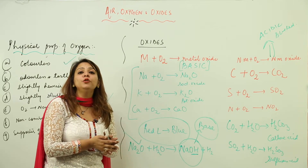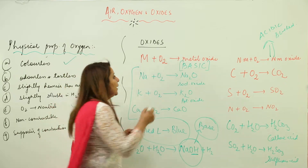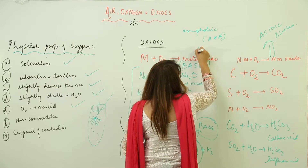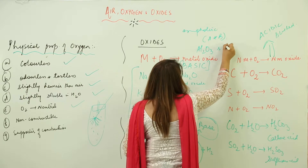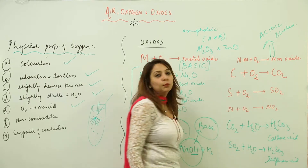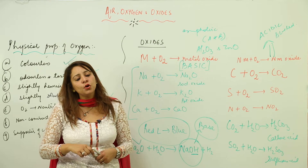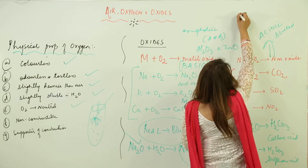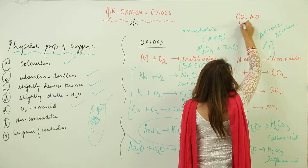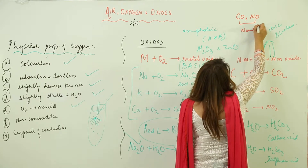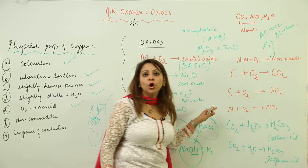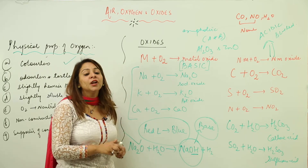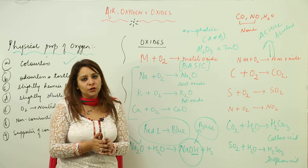We have a few oxides that are amphoteric in nature, meaning they have both acidic and basic character. These include aluminium oxide and zinc oxide. We also have a few neutral oxides such as carbon monoxide, nitric oxide, water, and hydrogen — these are all neutral, neither acidic nor basic.